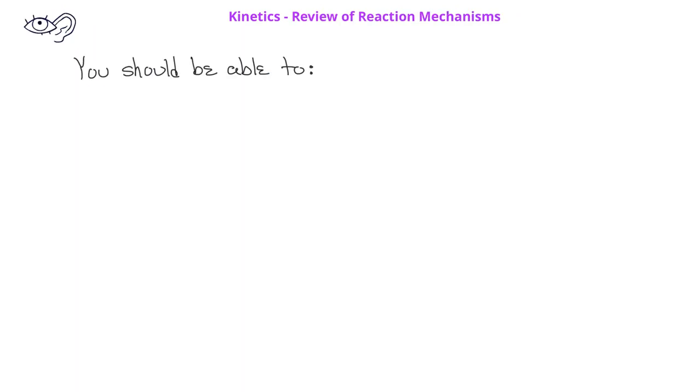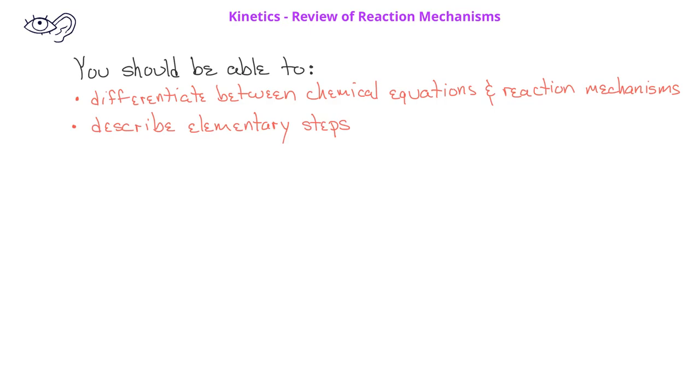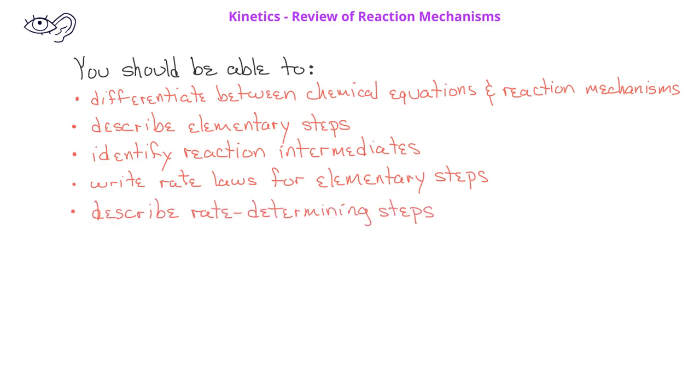By now, you should be able to differentiate between chemical equations and reaction mechanisms. You should also be able to describe elementary steps. You should be able to identify reaction intermediates in a reaction mechanism. You should also be able to write rate laws for elementary steps in a reaction mechanism. Finally, you should be able to describe rate determining steps.